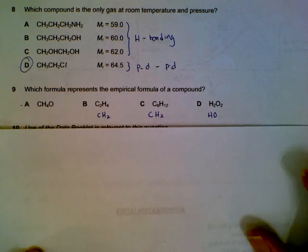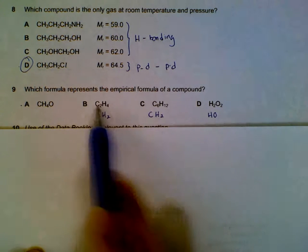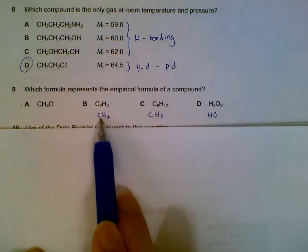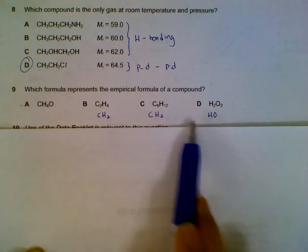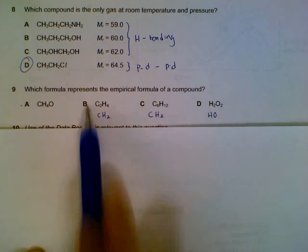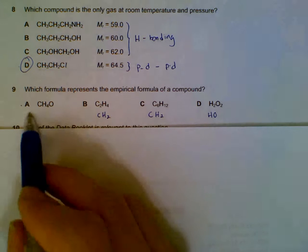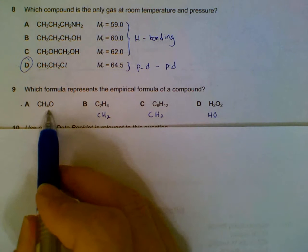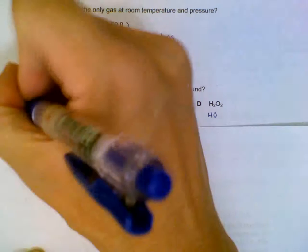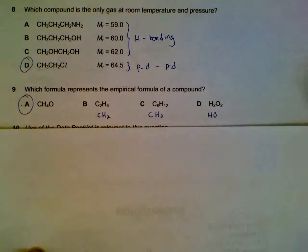Number nine: which one represents empirical formula? B, C, and D can still be simplified to a simpler ratio, so they're not empirical formulas yet. A is already simplified to the simplest ratio, so it could be an empirical formula.